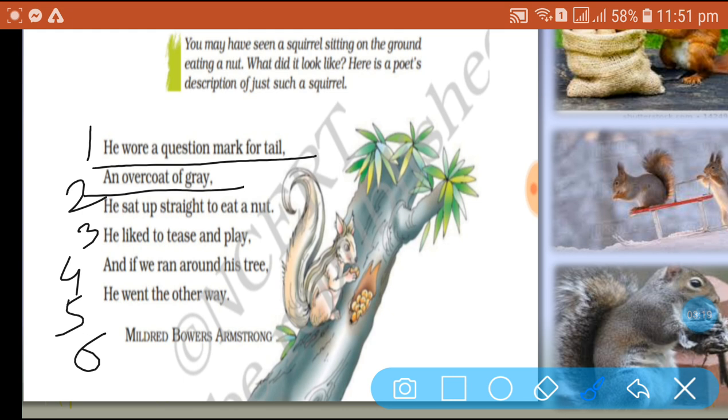poem, 'He wore a question mark for tail, an overcoat of grey.' Are you getting any similar tone between these two lines? Similar tone means to say that we would have to denote it with different letters. Like if we give it 'a,' we'll have to give it 'a.' We'll have to give it 'b.'